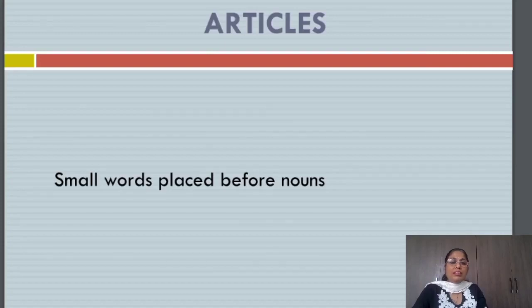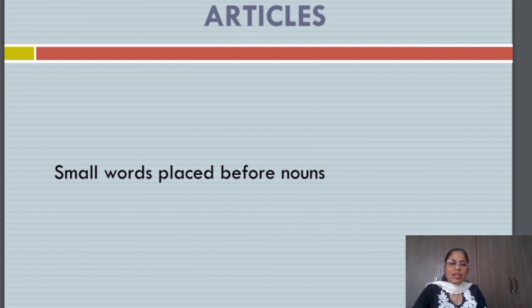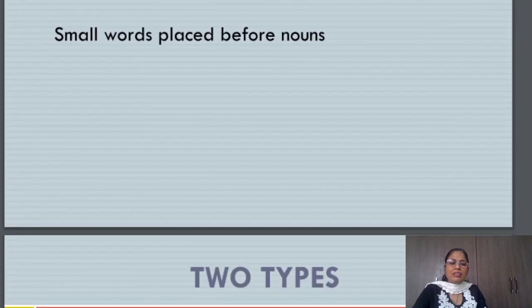First of all, let us understand what are articles. Articles are very small words that are placed before nouns. Those words are a, an and the.